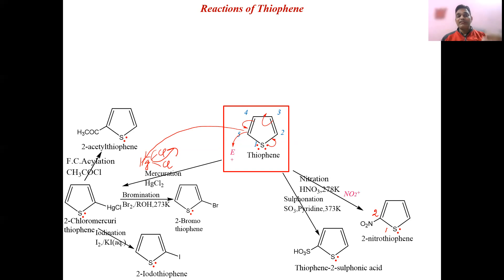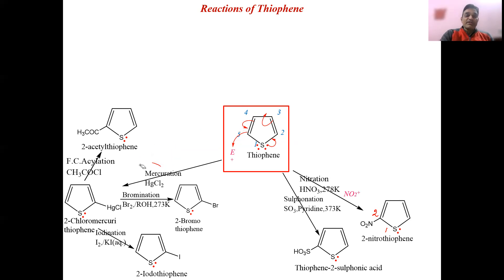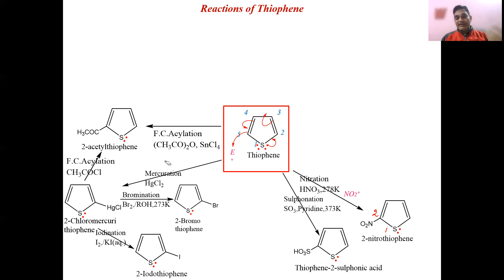The product 2-acetylthiophene is produced. It will easily displace HCl. 2-Acetylthiophene can also be prepared directly via Friedel-Crafts acylation reaction by using acetic anhydride in presence of SnCl4.